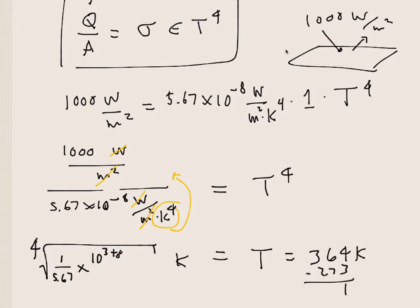So what I got when I did this is 364 Kelvin minus 273. So that looks like 81 Celsius. Wow, that's hot. That is really hot. 81 degrees Celsius. It's nearly boiling.